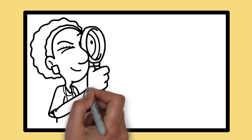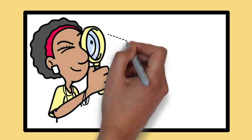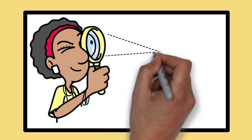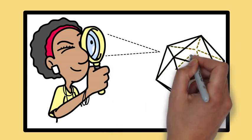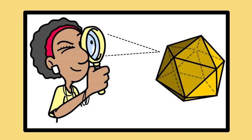Monocular cues are visual signals that help us perceive depth and distance using only one eye. These cues are crucial for interpreting the three-dimensional world around us when binocular cues which rely on both eyes are unavailable.